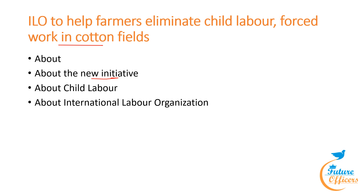By upholding FPRW, cotton growing communities can foster a more equitable, sustainable and prosperous environment for all workers, leading to long-term benefits for individuals and families. The project also aims to promote social finance, financial inclusion and bank linkage for farmers and agricultural workers, and enhance their access to digital literacy programs. The ILO defines child labor as work that deprives children of their childhood, potential and dignity, harmful to physical and mental development. SDG 8.7 aims to end child labor by 2025.